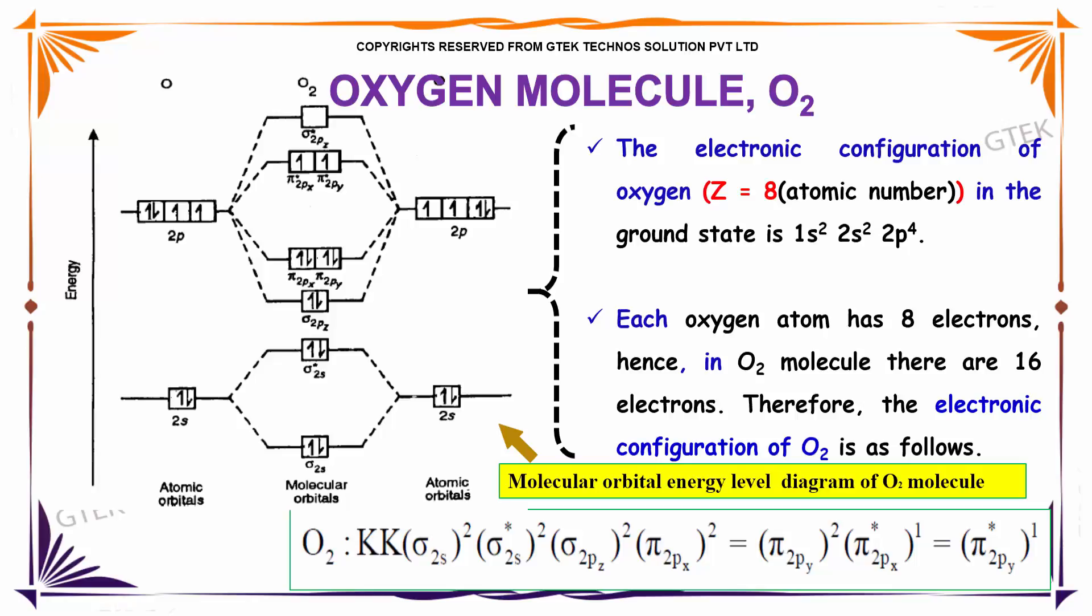Each oxygen atom has 8 electrons. Hence, in O2 molecule there are 16 electrons. Therefore, the electronic configuration of O2 is as follows.